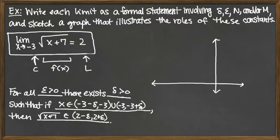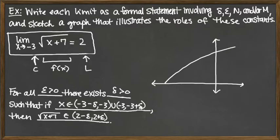So that would be our formal statement given the mathematical statement. Now we need to graph this to show how the constants delta and epsilon come into play. The square root function looks like the upper part of a parabola opening to the right, and it needs to be shifted left 7 based on the plus 7 inside the square root. So our function square root of x plus 7 looks like this, starting at negative 7.